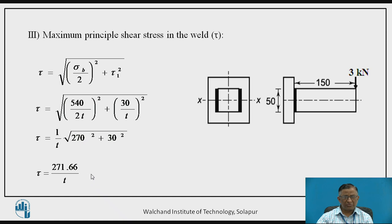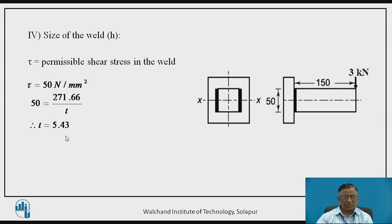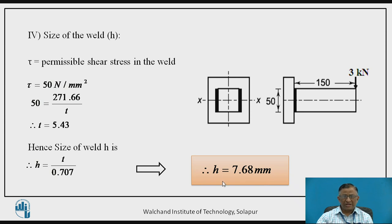Using that maximum shear stress value, it is restricted to the permissible shear stress for safe design. The permissible shear stress given is 50 N/mm². By equating, we get the throat size T = 5.43 mm. The leg size H (the specified weld size) is H = T / 0.707, which results in a weld size of 7.68 mm. This is the required leg size of the weld for this problem.